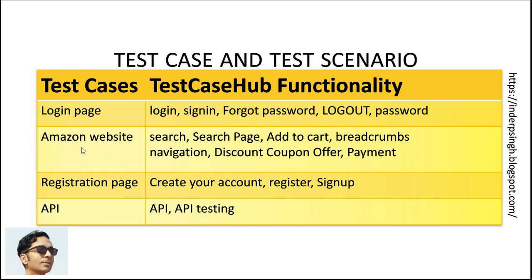Similarly, for an Amazon website I can look for search functionality, search page, add to cart, breadcrumbs, navigation, discount coupon, offer, and payment. For a registration page I can search for 'create your account,' 'register,' and 'sign up' functionalities on Test Case Hub.